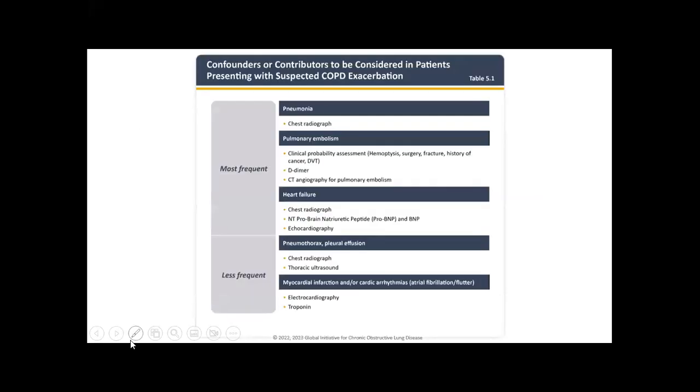Also important to look at confounders or differential diagnoses. Pneumonia is both a confounder and contributor. Pulmonary embolus is also a confounder and contributor. In up to 30 to 40% of patients who present with COPD exacerbation, a PE is found as a precipitant. CT angio is recommended as investigation of choice. If you have access to nuclear medicine, a VQ scan is just as effective. Other differentials: heart failure, pneumothoraces, effusions, MI or cardiac events.